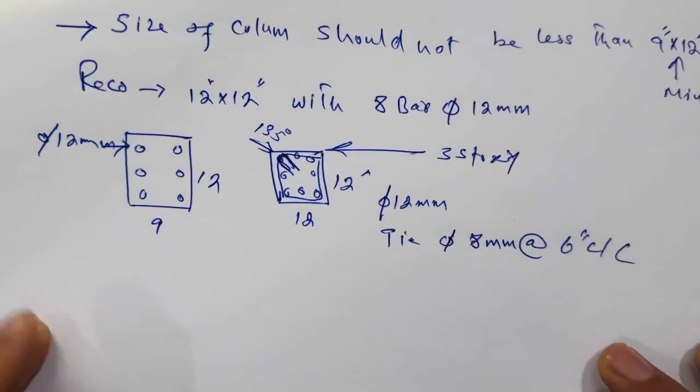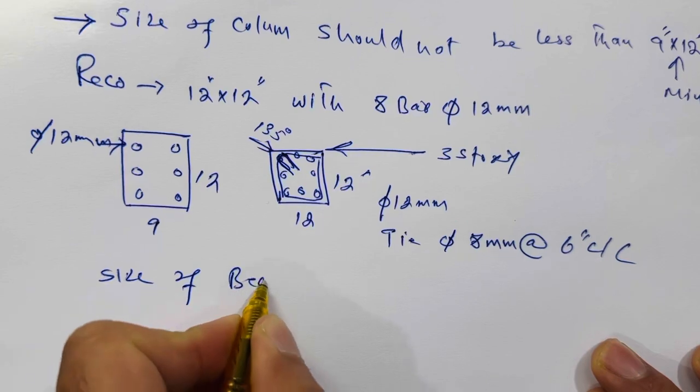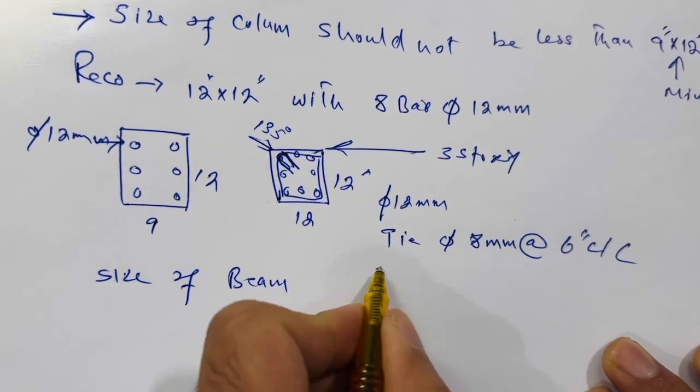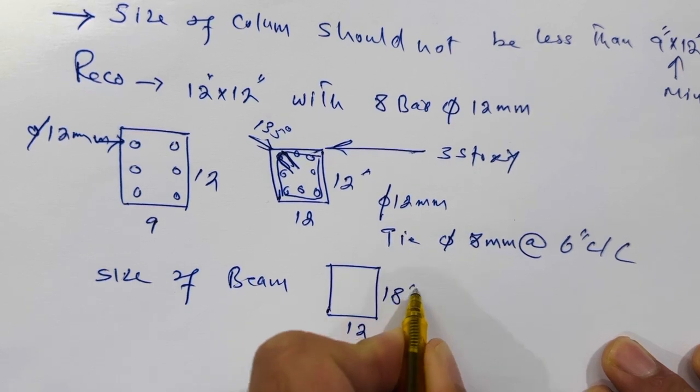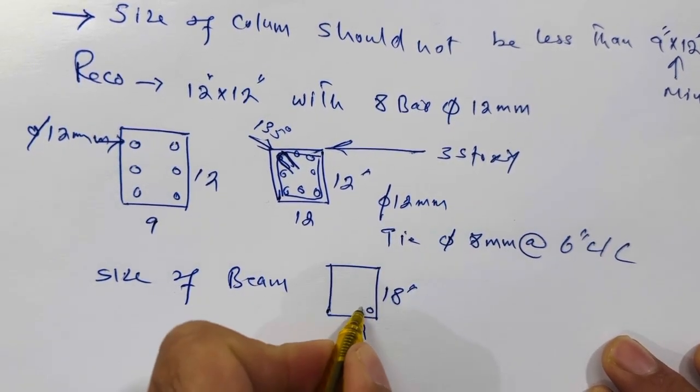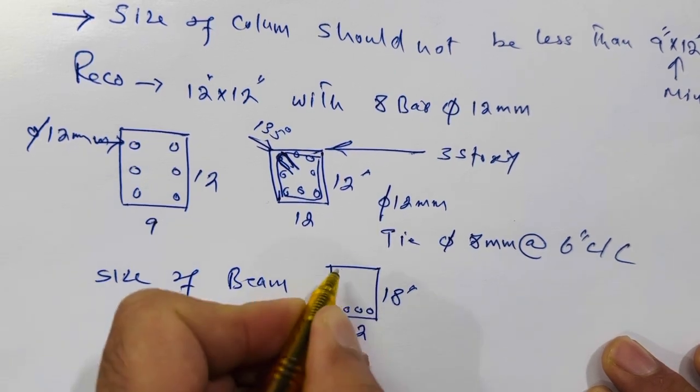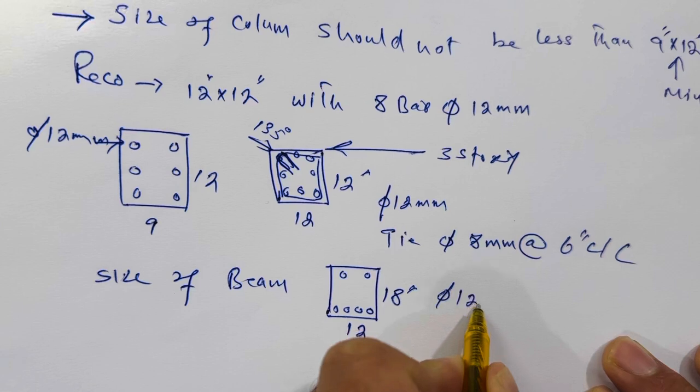Next, let me guide you for size of beam. So size of beam should be 12 inches by 18 inches, not less than this, with six numbers of steel rods - four at the bottom and two at the top - and the diameter should be 12 millimeter.